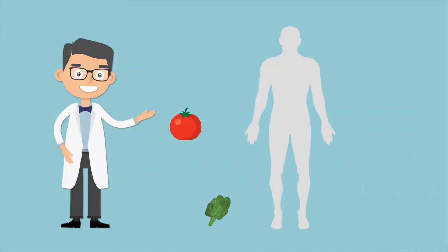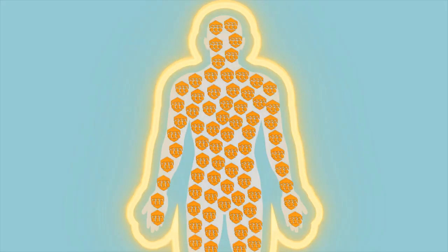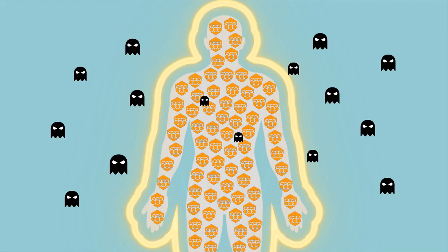Fortunately, we can get large amounts of antioxidants by eating a wide variety of fruits and vegetables. These antioxidants help us destroy free radicals and protect us against free radical damage.